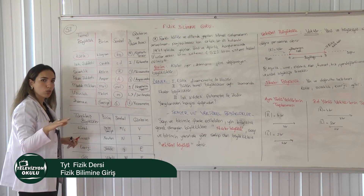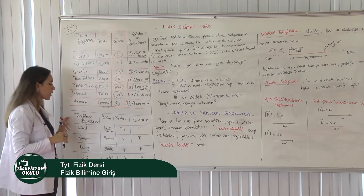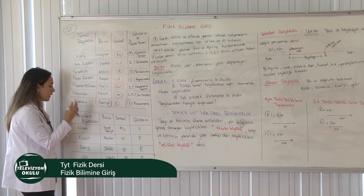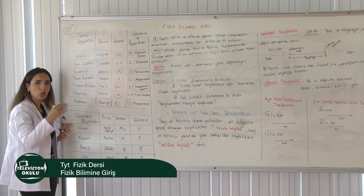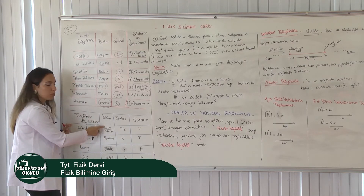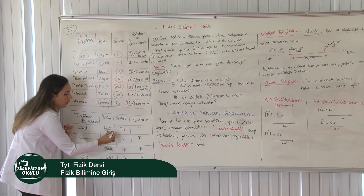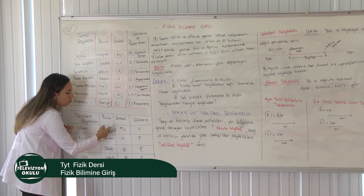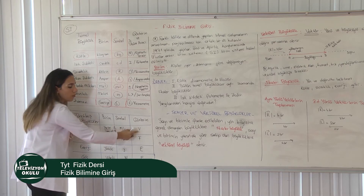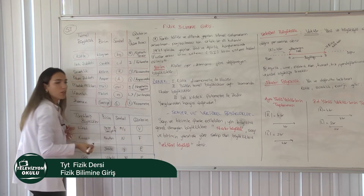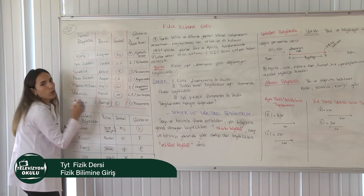Temel büyüklükler kısamızdan oluştu. Bunların dışında kalanlar türetilmiş büyüklüklerdir. Türetilmiş büyüklüklerden birkaç örnek verelim. Sürat bir türetilmiş büyüklüktür; birim zamanda alınan yoldur. Yani uzunluk birimi metre, zaman birimi saniye olduğu için süratin birimi metre/saniye olacak. Sorularda süratı v harfi ile görebilirsiniz.